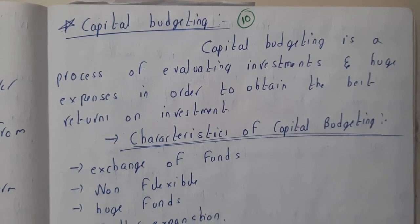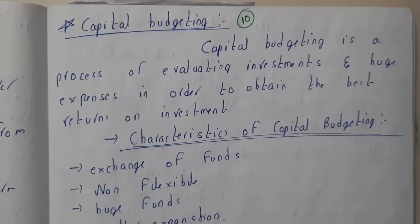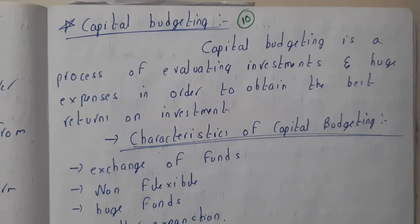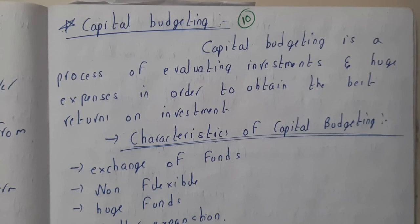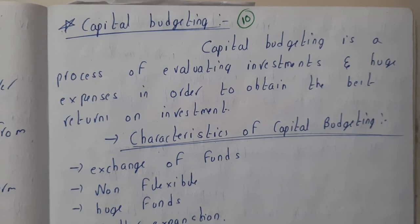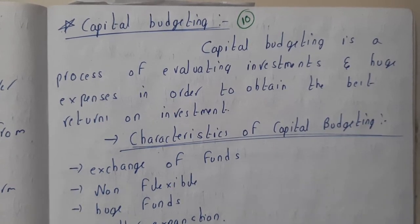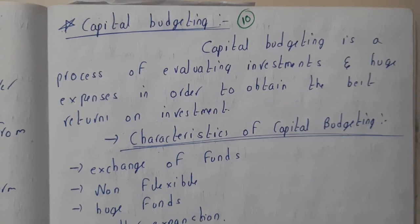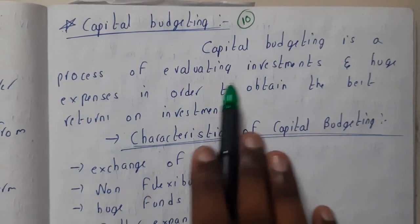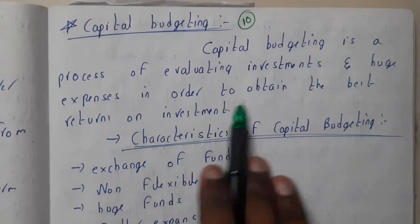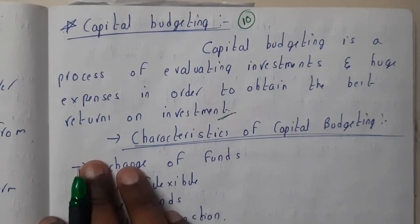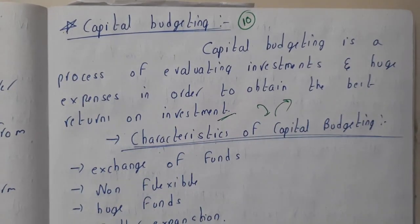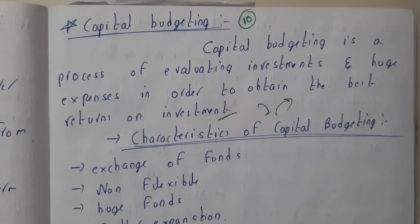Hello guys, we are back with our next lecture. In this lecture, let us go through capital budgeting. Capital is nothing but your initial investment by the proprietor or owner of the company. So capital budgeting means budgeting the capital — how much you should invest so that you get it back. If you invest 5 lakhs you should get at least 6 lakhs; that 1 lakh will be your profit. Capital budgeting is a process of evaluating investments and huge expenses in order to obtain the best returns on investment.